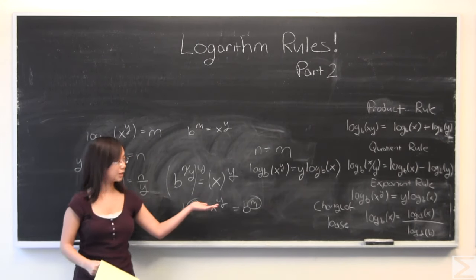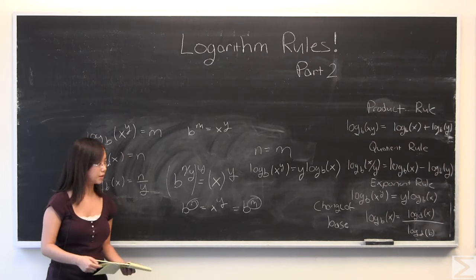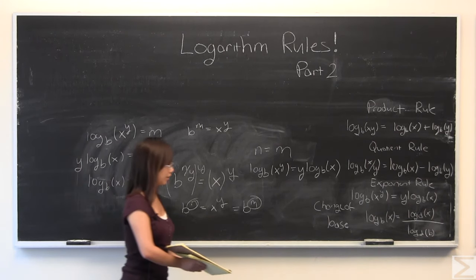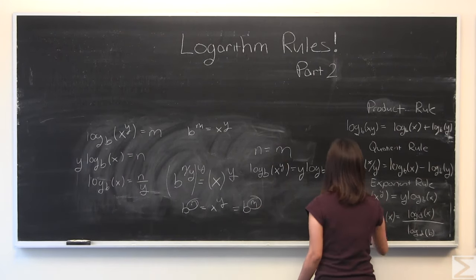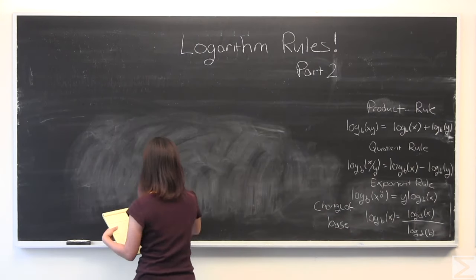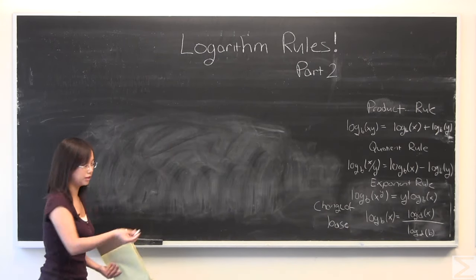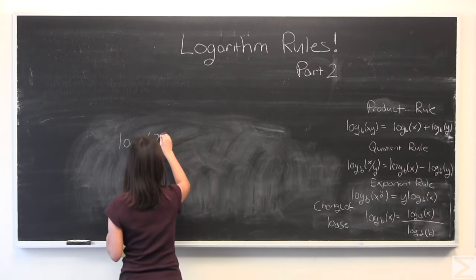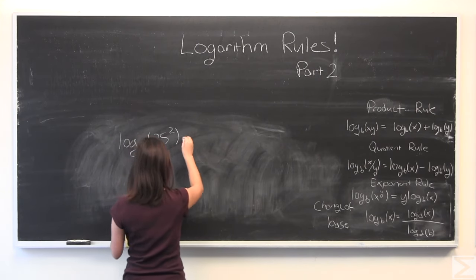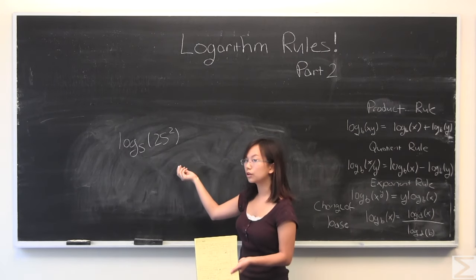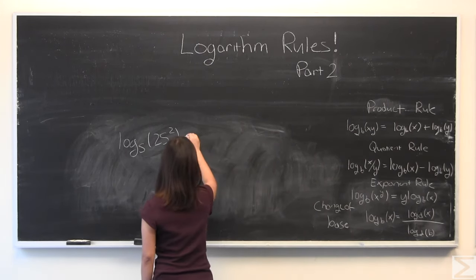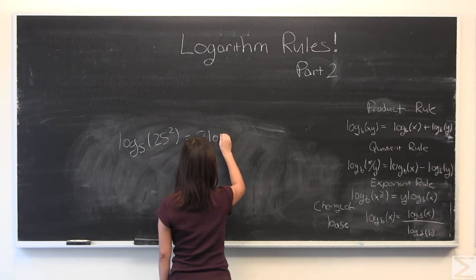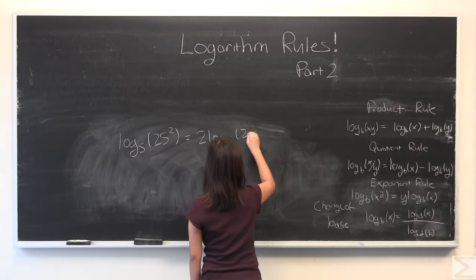All right, and this is very helpful, because you can simplify problems pretty easily with this. I'm going to give an example right now. All right, say we had something like log base 5, 25 squared. And you don't necessarily want to calculate, or if you don't know, 25 squared off the top of your head. You can just turn this into 2, log base 5, 25.